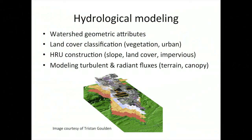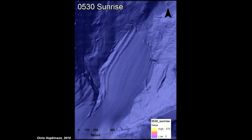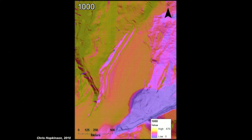Other areas where we can utilize LiDAR very directly are in modeling turbulent and radiant fluxes — for example, shortwave radiation modeling or aerodynamic resistance modeling. Here we have a radiation modeling system, implemented as a radiation model in a GIS. If we run this through time, we can generate spatial models of radiation across the landscape.